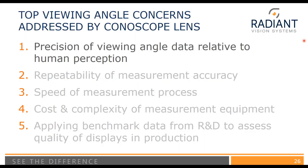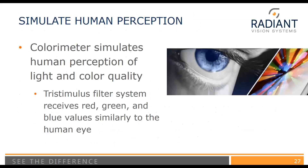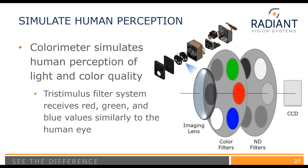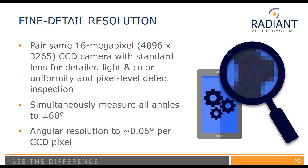The Conoscope lens addresses the precision of viewing angle data relative to human perception by pairing with a colorimeter with CIE matched color filters and a scientific-grade CCD. With a standard 16-megapixel colorimeter, that camera can be used with a standard lens for performing detailed light and color measurements, uniformity measurements, and pixel-level defect inspection. Pairing with a Conoscope lens, you can simultaneously measure all angles out to 60 degrees with an angular resolution of 0.06 degrees per CCD pixel.